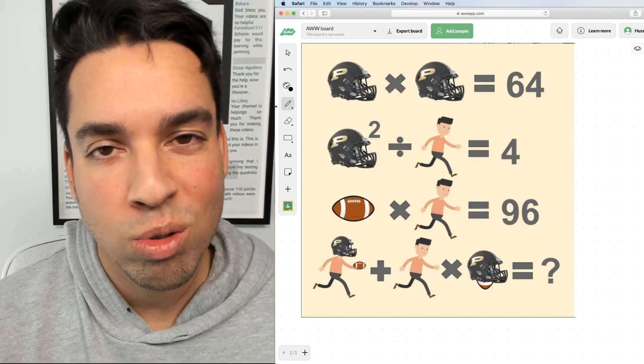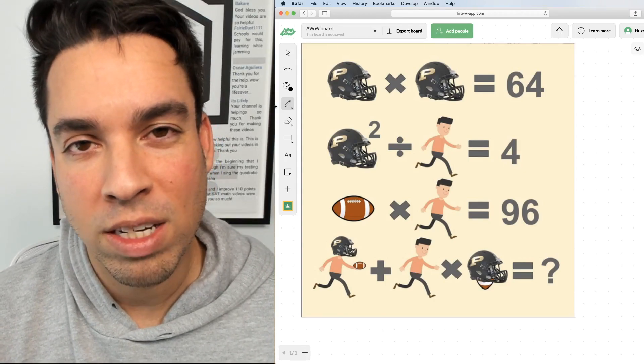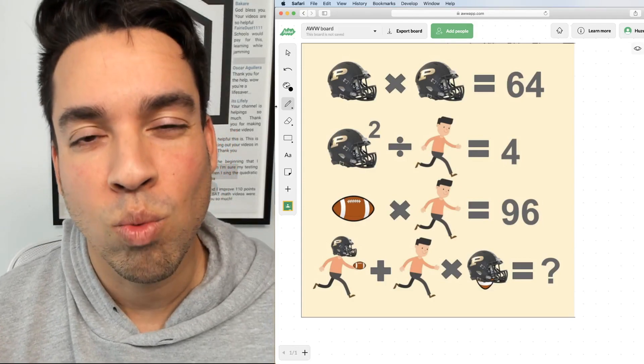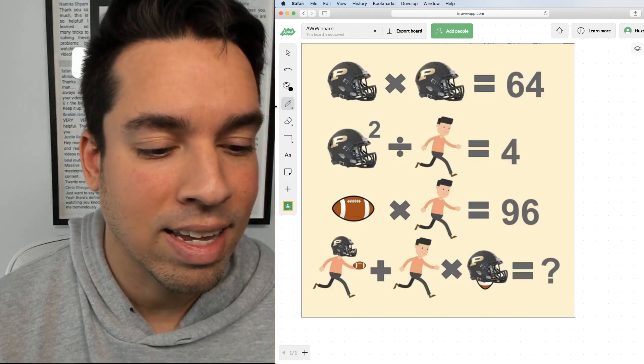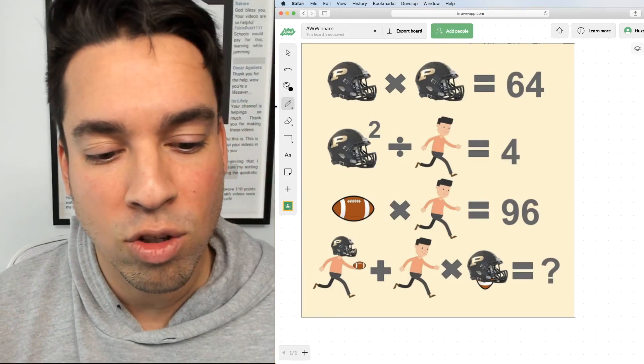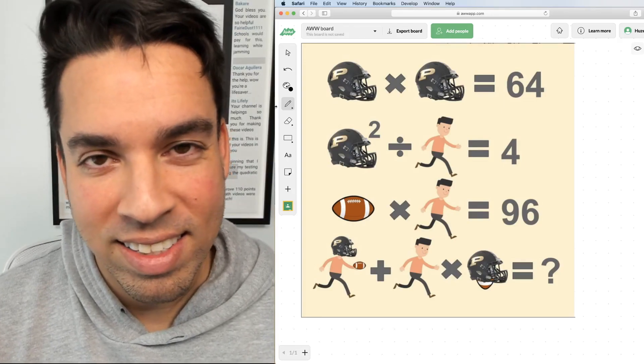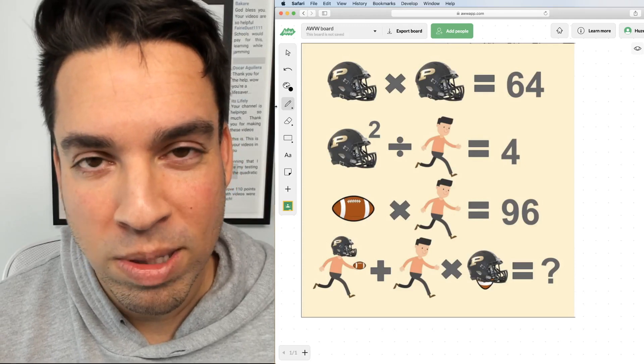I want you to simply use logic and reasoning to try and solve this. Figure out what each of the components in the equations represents numerically and go from there. One quick caveat: that last line has a lot of tricks and little hidden symbols that you want to take heed of. Hit that pause button and see if you can figure it out. When you're ready, hit play and I'll give you the explanation.